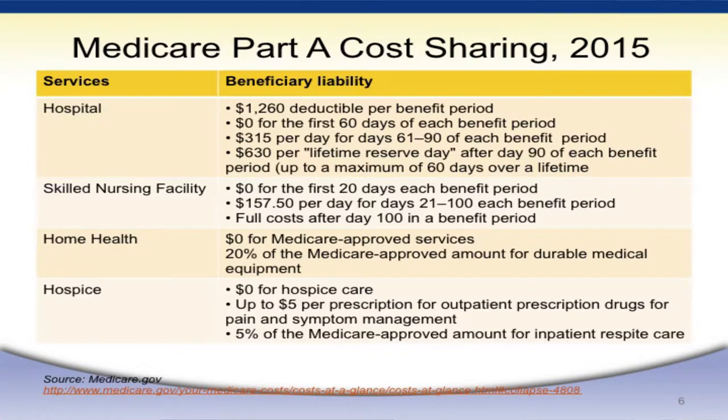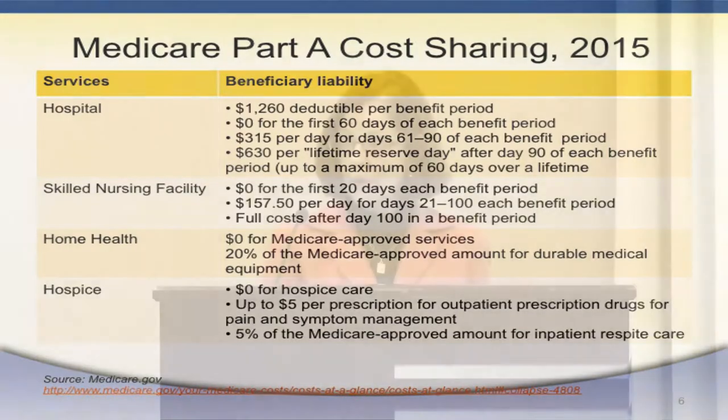For cost-sharing, I recommend looking at the Medicare & You handbook that goes out to beneficiaries — it's written in large type and plain English, and it's a really good effort to explain a complicated program simply. There is an inpatient hospital deductible of $1,260, and people with longer stays will have co-payments per day. For skilled nursing facility — the post-hospital skilled nursing benefit — there's no cost-sharing for the first 20 days, then $157.50 per day. There's generally no cost-sharing for home health visits, though durable medical equipment has cost-sharing, and for the most part no cost-sharing for the hospice benefit.